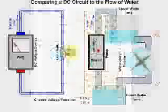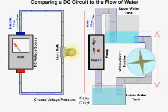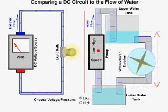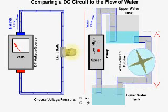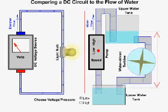Electrons flowing in a circuit can be compared to water flowing through pipes. In this animation, we see an electric circuit on the left and a water circuit on the right. The pump is like the voltage source. It pumps from the lower tank to the upper tank, raising the pressure.